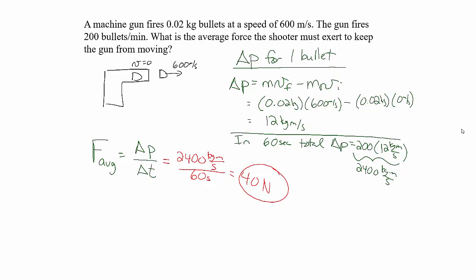Again, that does not mean that he was exerting a constant force of 40 newtons. The force spikes up when the gun is firing. The force is zero for the situations where the gun is not firing.